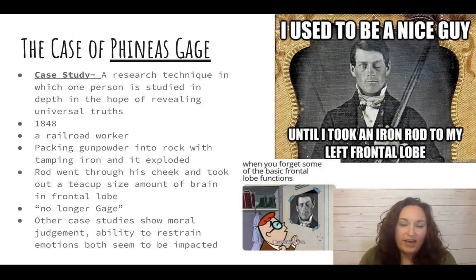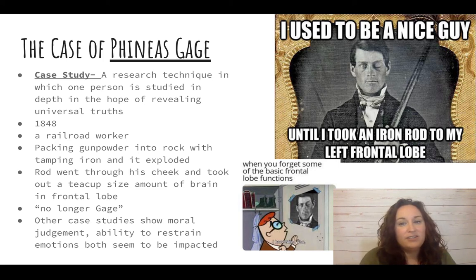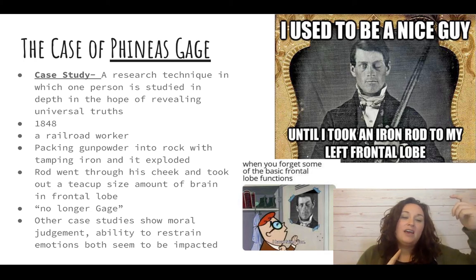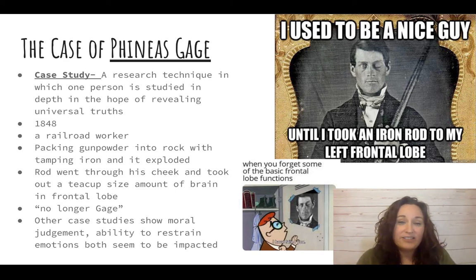We're going to start with a case study on a man named Phineas Gage. In the 1800s, Phineas Gage was a railroad worker and he was packing gunpowder into rock by tamping an iron rod, and the gunpowder exploded. The rod — the iron rod that he is holding in this photo — went through his head and out the top of his head.